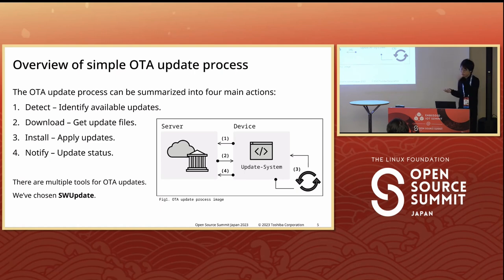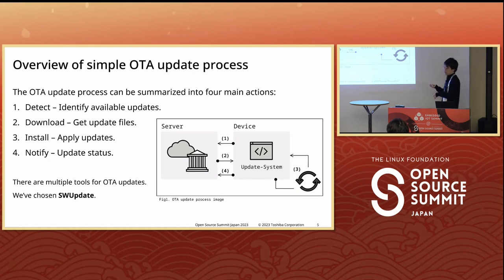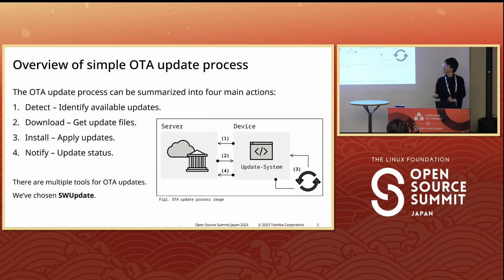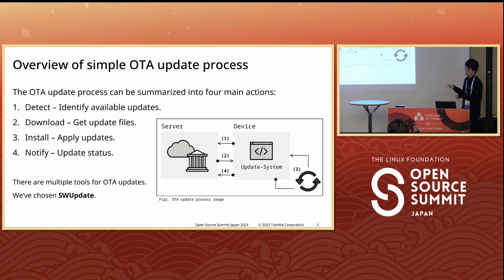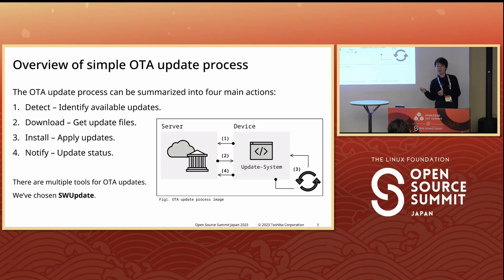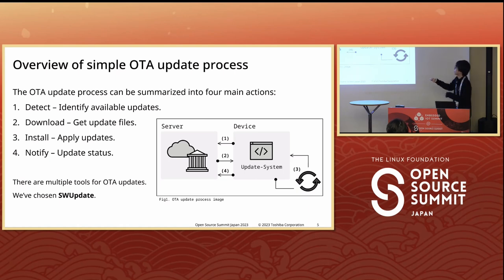The OTA update process can be summarized into four main actions. First is detecting — the device checks to see if it needs an update. Second is downloading — if there is an update, the device downloads the update image. Third is install — the device installs the downloaded image. Unlike update processes such as apt, PyPI, or similar package managers, embedded devices require an additional step to report status to the server. This fourth step is notify — the device shares data with the server.